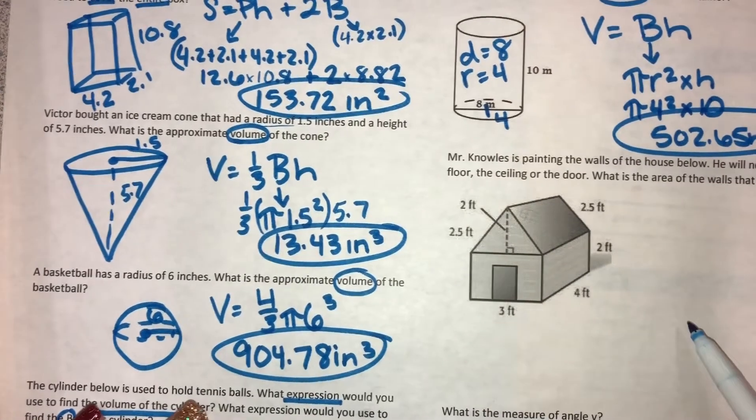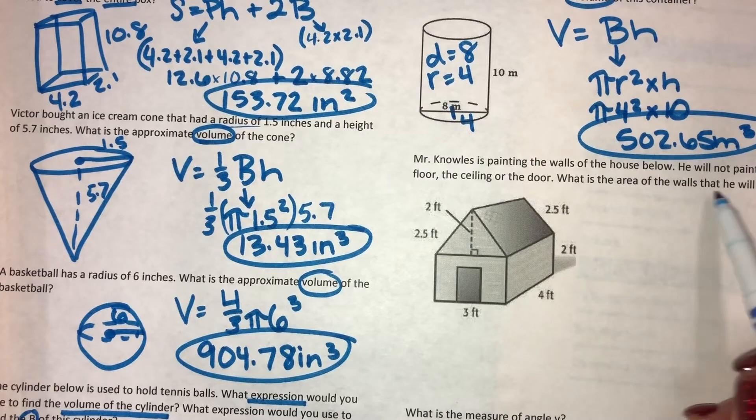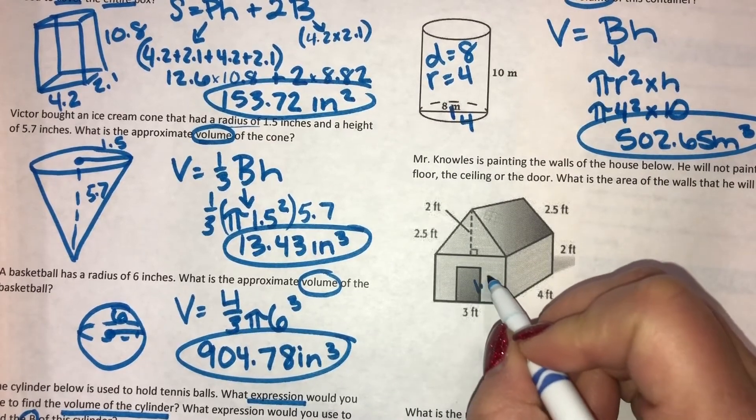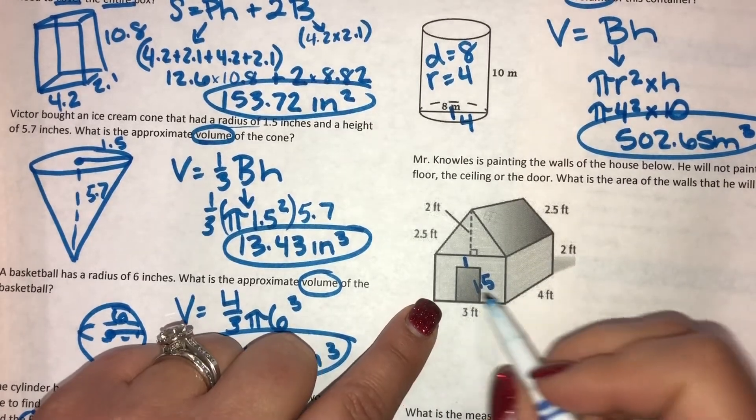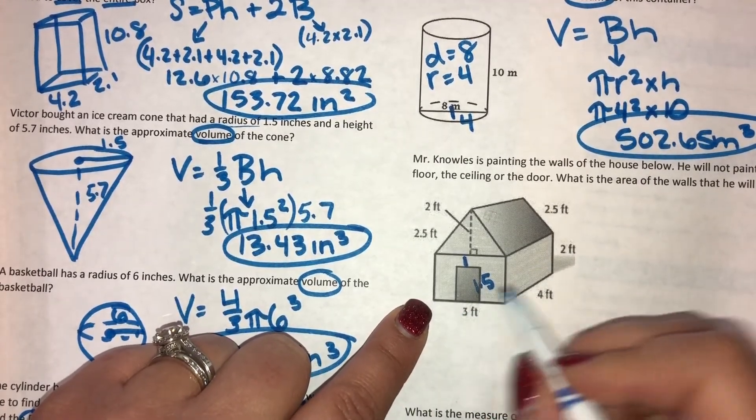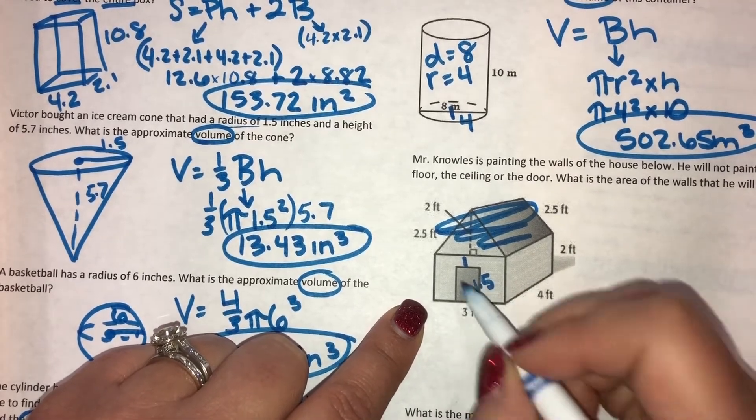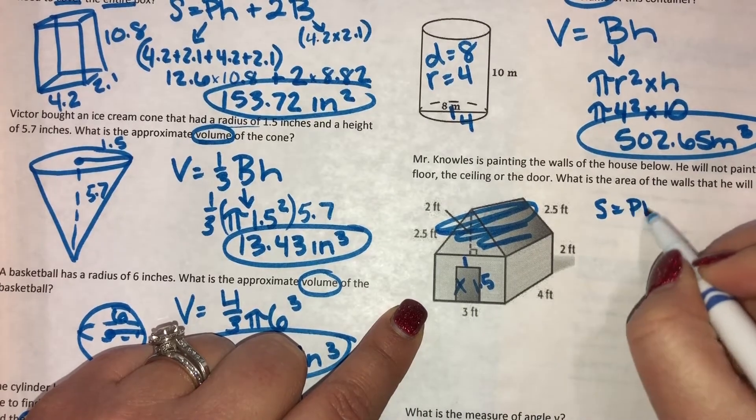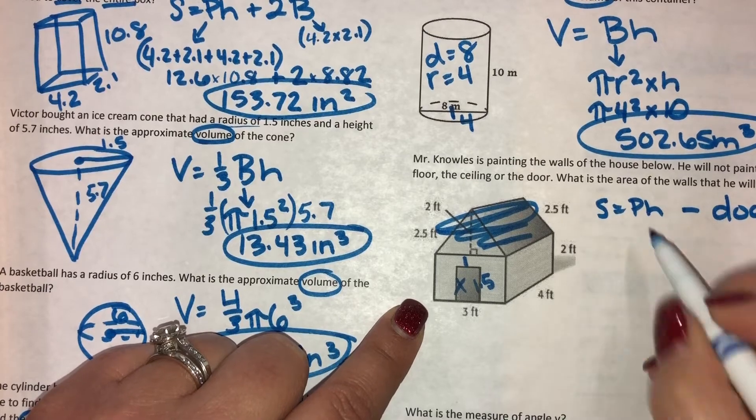Mr. Knowles is painting the walls of the house below. He will not paint the floor, the ceiling, or the door. What is the area of the walls that he will paint? And for some reason the door got left off. So this measures 1.5 by 1 for the door. So he's basically going to paint the walls, but not the roof, and not the floor, and not the door. So it's lateral, but after you find that, you have to subtract the door from it.